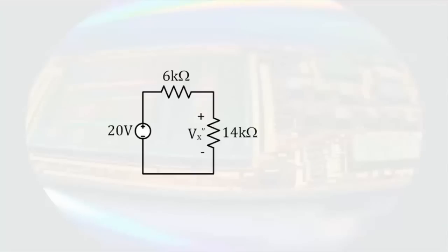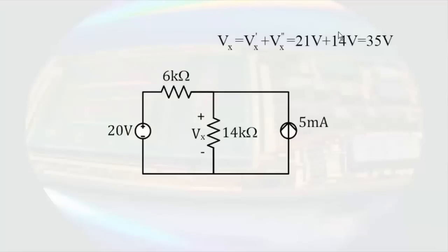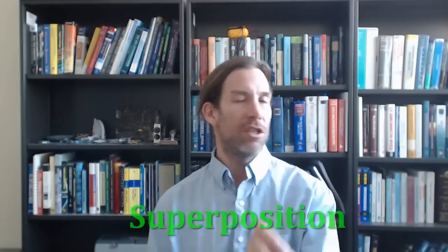Going back to the original circuit, the total value of Vx is equal to the individual contributions from the sources. So Vx will be equal to Vx prime plus Vx double prime, or 21 volts plus 14 volts, which is equal to 35 volts. The principle that the total response of a linear network is equal to the sum of responses to each of the individual sources in the circuit is called superposition.